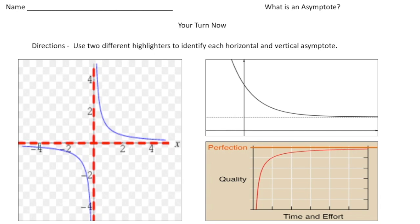For the first one, the horizontal asymptote is going to be this line right here. And the vertical one goes up and down just like this.